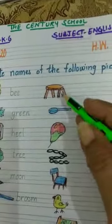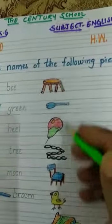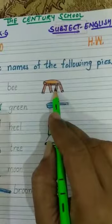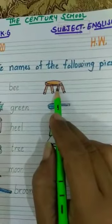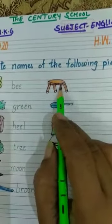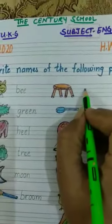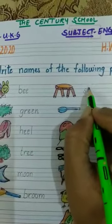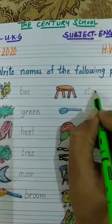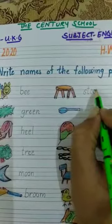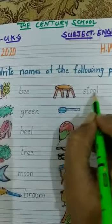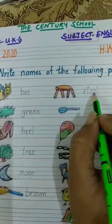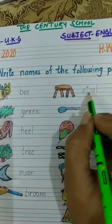Yes, here are some more pictures. Let's see. What is this? This is a picture of stool. This is a picture of stool. S, T, double O, L — stool. S, T, O, L — stool.